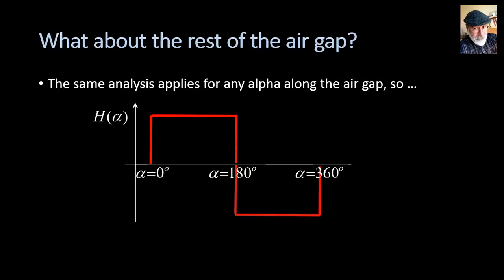What about the rest of the air gap? The same analysis can be applied to any point alpha along the air gap. So the magnetic field has a space shape of a square wave like that. Between 0 degrees and 180 degrees, it has a constant positive value, and between 180 and 360, the same value but negative.